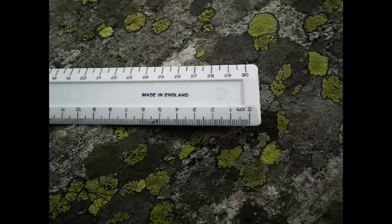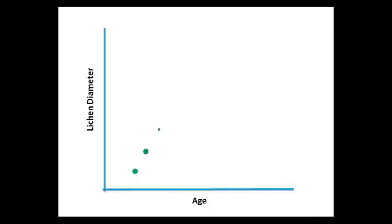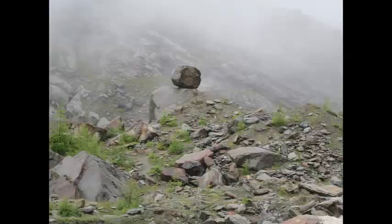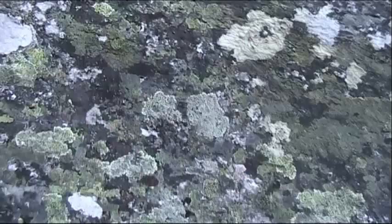Lichenometry is the use of lichens in dating substrate. There is a direct relationship between size and age of lichen. Researchers have used lichens to date slope deposits and debris flow. The assumption is made that there is no major time lapse between surface exposure and colonization.